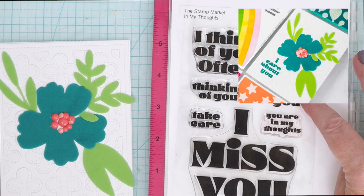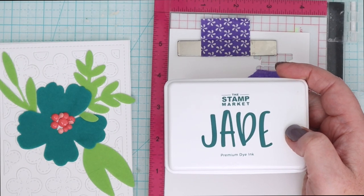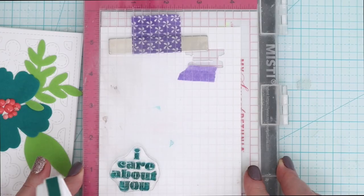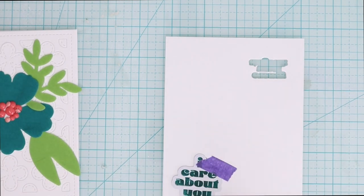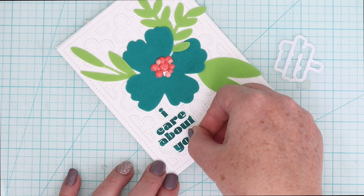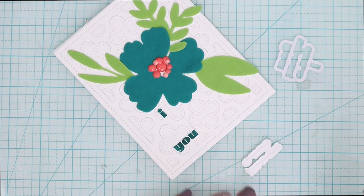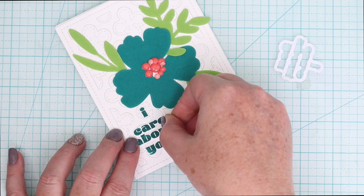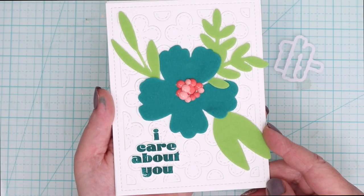I'm going to use the same sentiment stamp set only a different sentiment this time that I care about you and I'm going to use jade ink to stamp it out on white cardstock and then cut it out with the dies and use the ultra bond to adhere it down to my cardstock panel. This way I have a little time to move it around and make sure it's straight but again you get all that texture from the flock and such vibrant color as well.